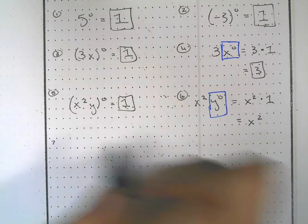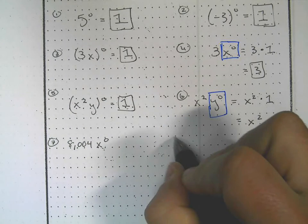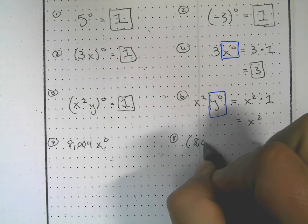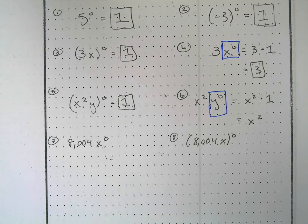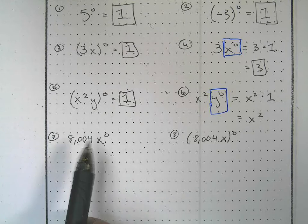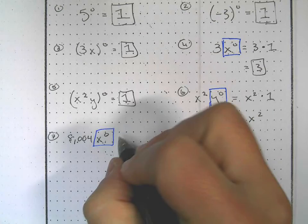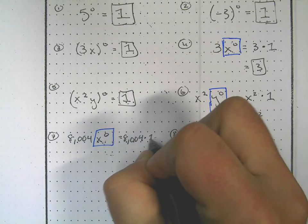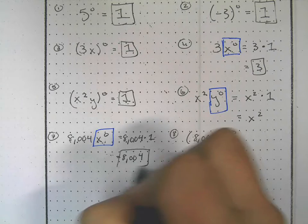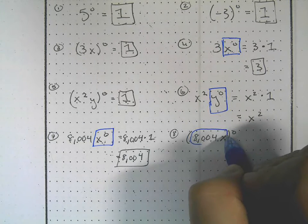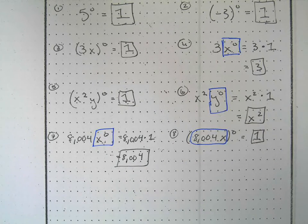Let's do two more. We have 8004 times x to the zero, and we have (8004x) to the zero. The first one has no parentheses, so x to the zero is treated by itself — that gives 8004 times one, which equals 8004. On the second, the entire expression is being raised to zero, so it equals one.